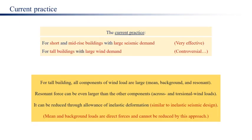The current practice is very effective for short and mid-rise buildings with large seismic demand, but controversial for tall buildings with large wind demand. For tall buildings, all components of wind load are large — mean, background, and resonant. Resonant force can be even larger than the other components for across-wind and torsional wind loads, and it can be reduced through allowance of inelastic deformation, similar to inelastic seismic design.